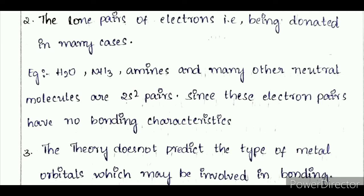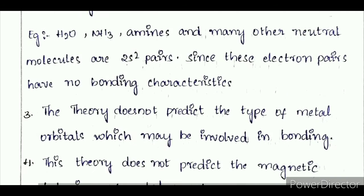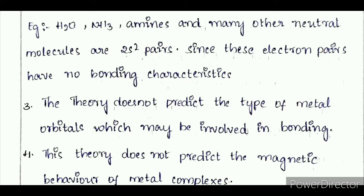The theory does not predict the type of metal orbitals which may be involved in bonding. Some of the metal orbitals are having certain properties in bonding metals to form a bonding.